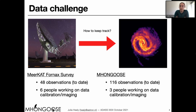For those of you that don't know, MHONGOOSE and MeerKAT Fornax surveys are two of the large survey projects with MeerKAT, and both of these are HI surveys. Fornax is comprised of a number of different pointings covering roughly 12 square degrees across the Fornax galaxy cluster, while MHONGOOSE is a deep survey of 30 individual nearby galaxies. Both surveys have a large number of observation tracks that have to be individually calibrated and imaged. Fornax has about 48 observations, MHONGOOSE has about 116.